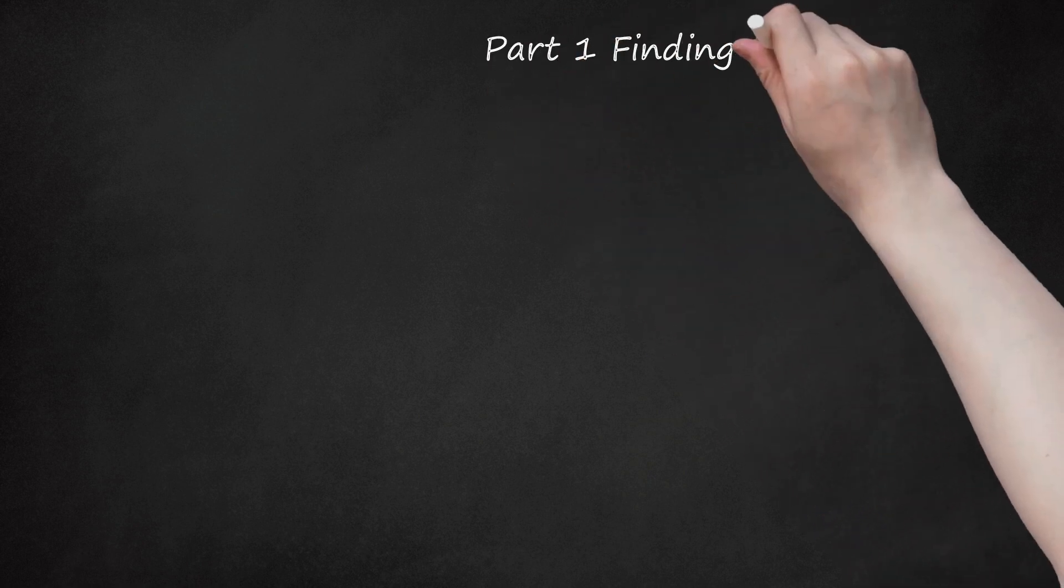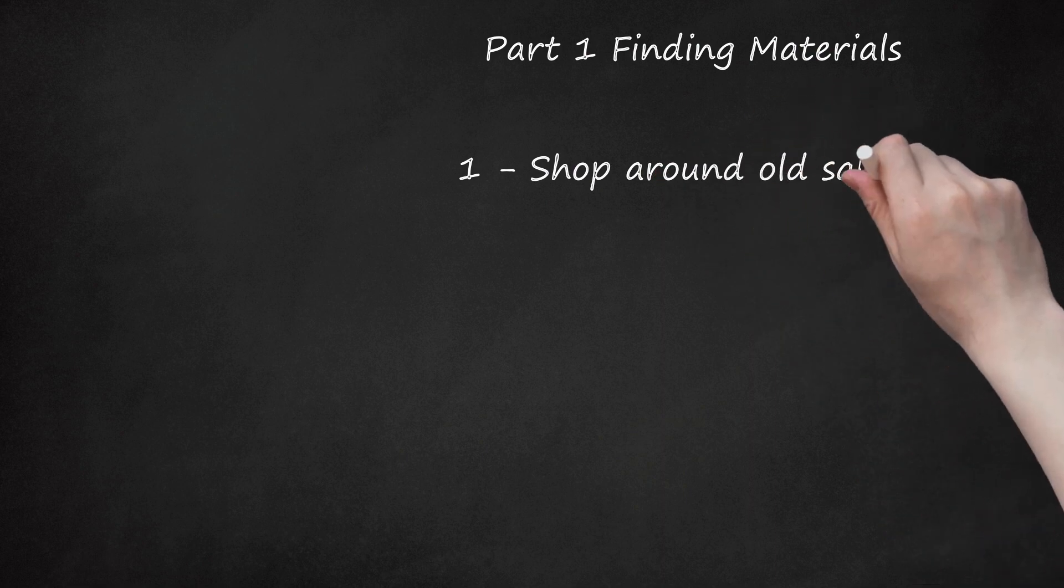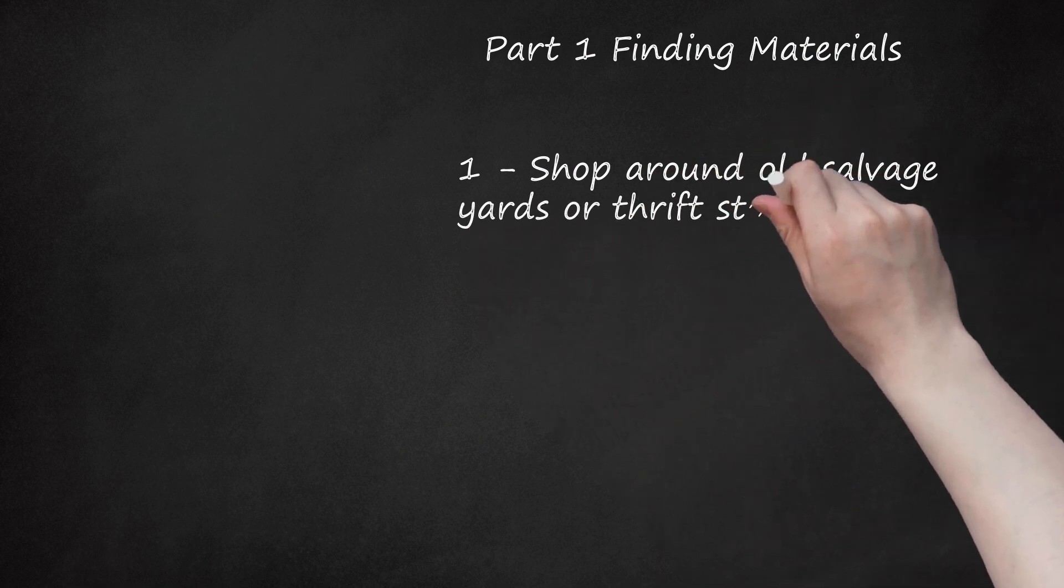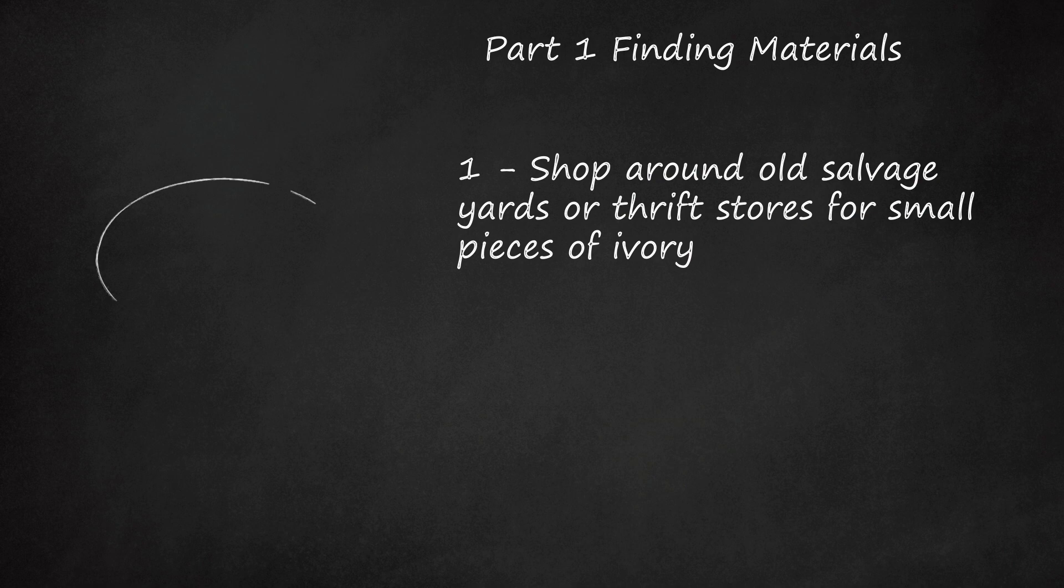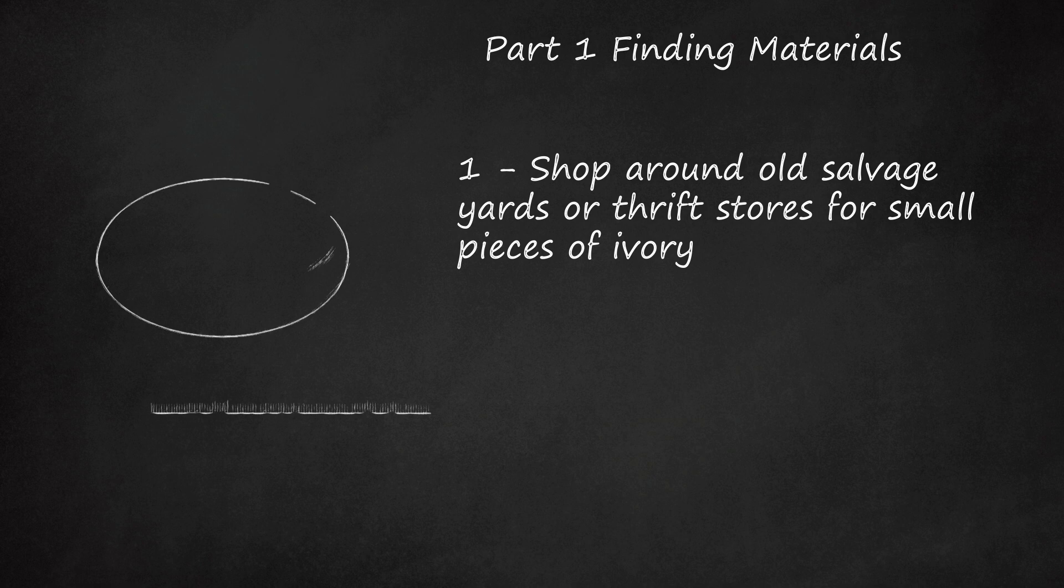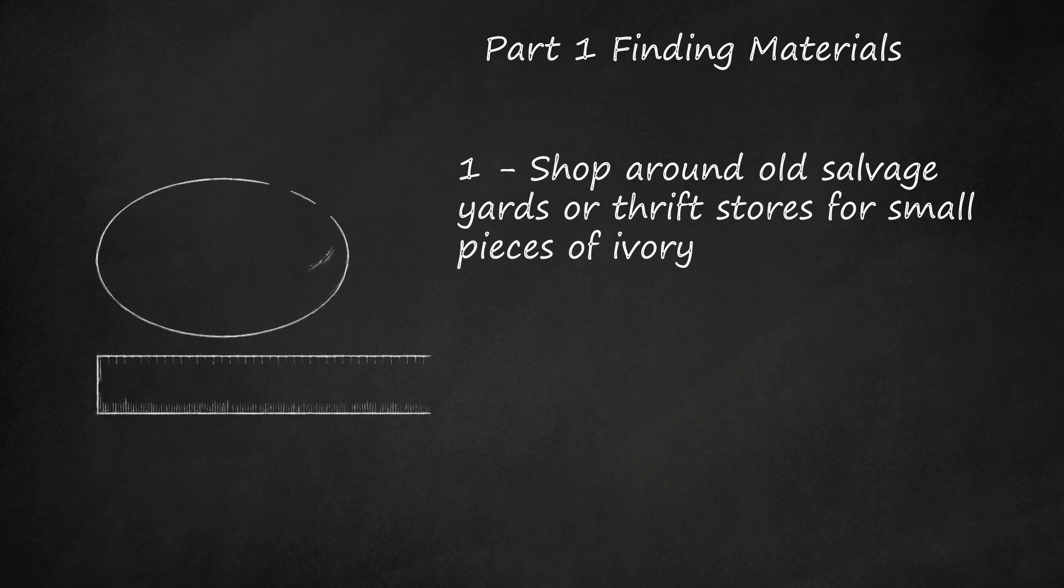Part 1 Finding Materials. Shop around old salvage yards or thrift stores for small pieces of ivory. If you are using whale ivory, make sure it was harvested before 1972, when the Marine Protection Act outlawed whaling in America. You can also use old ivory piano keys, bone, or white acrylic.